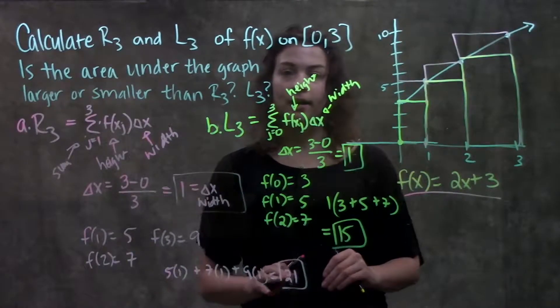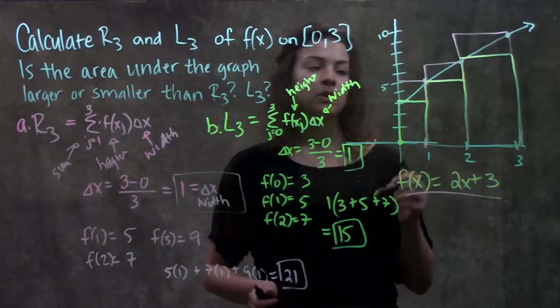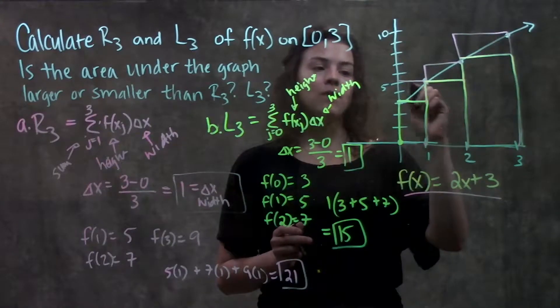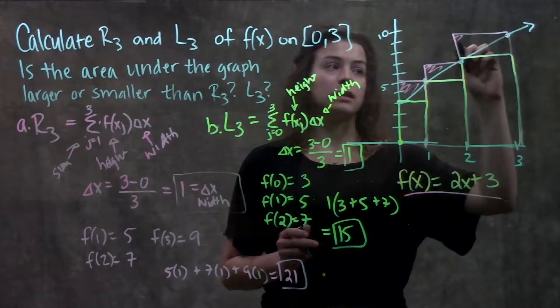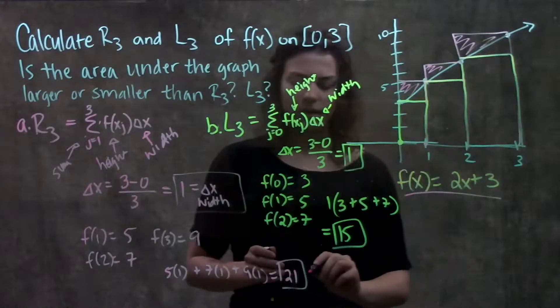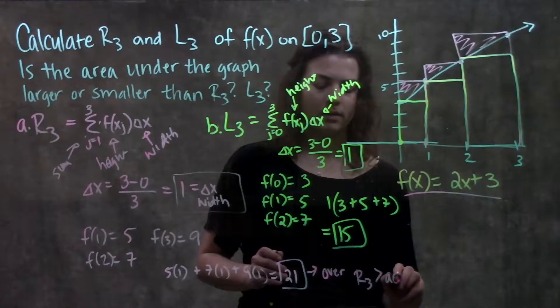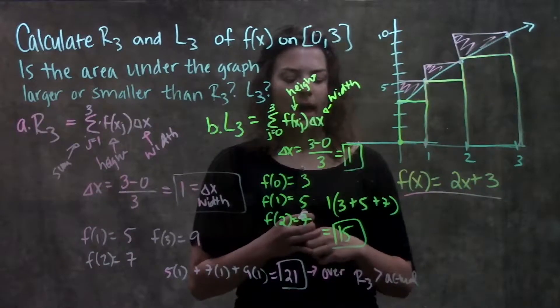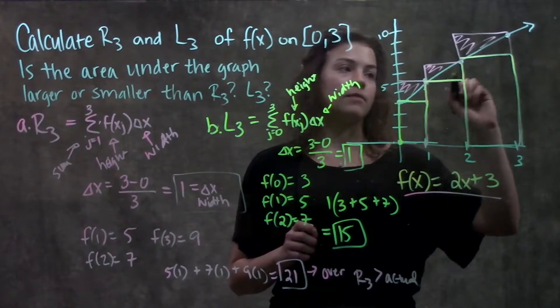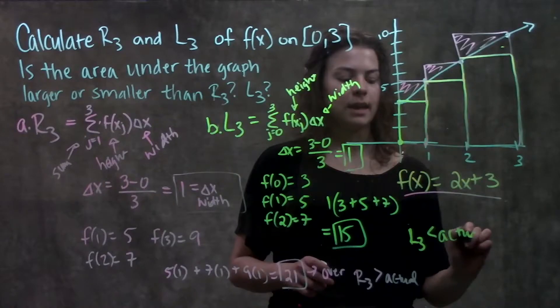So 21 was the area estimated using my right endpoints, 15 was the area estimated using my left endpoints. And I'm going to compare both these values with what the actual area is underneath my curve. Looking at my right endpoints, I see that all the rectangles I drew had extra area above my function that I didn't really need to calculate. That's extra area that I found. So that means that this value here is an overestimation. In other words, my right endpoint approximation was greater than the actual area underneath this function. And similarly for my left endpoints, I see that each of the rectangles I drew was missing a part of the function. That means that it was an underestimation. In other words, L3 is less than the actual area underneath my function.